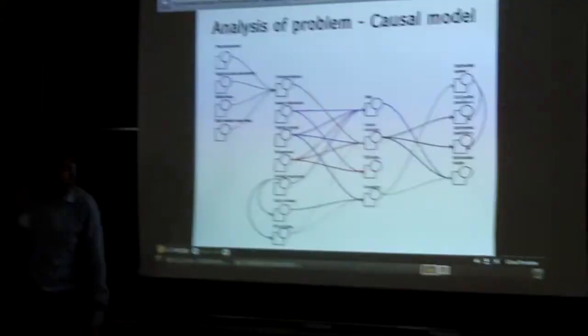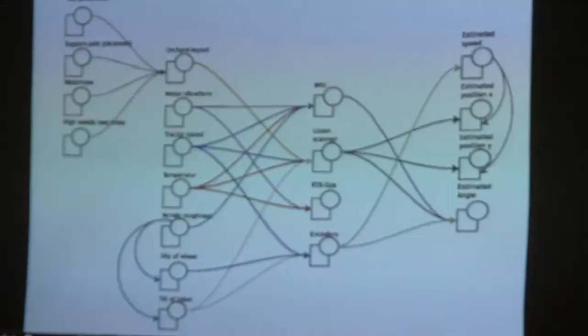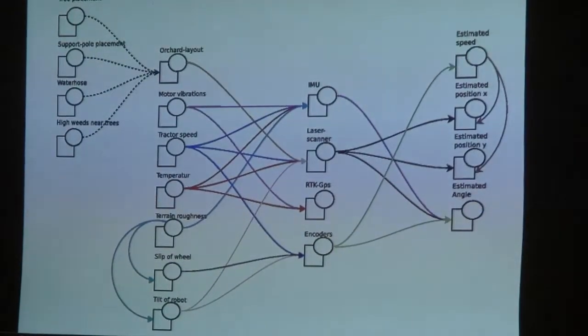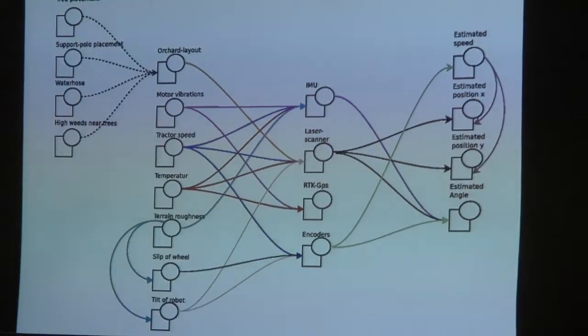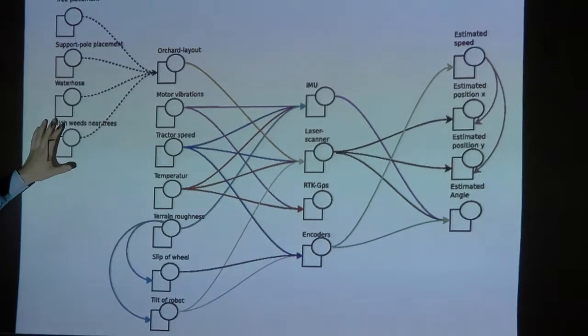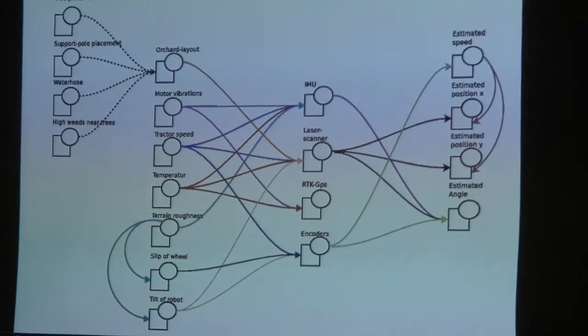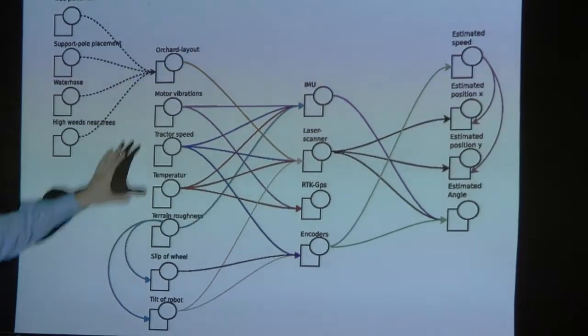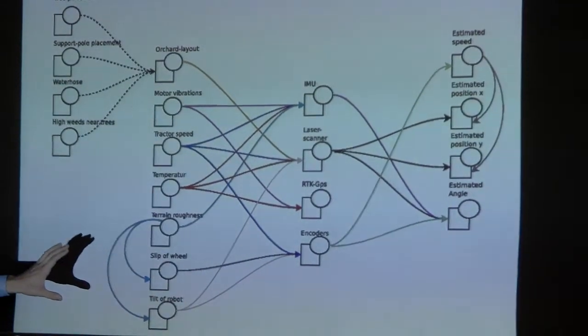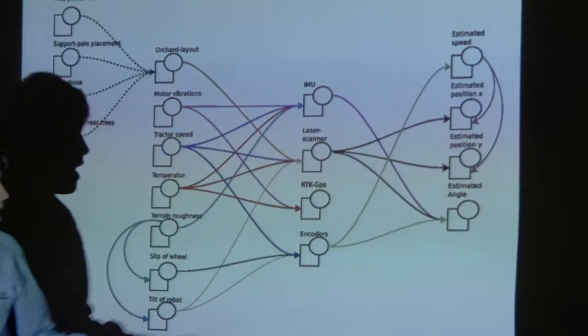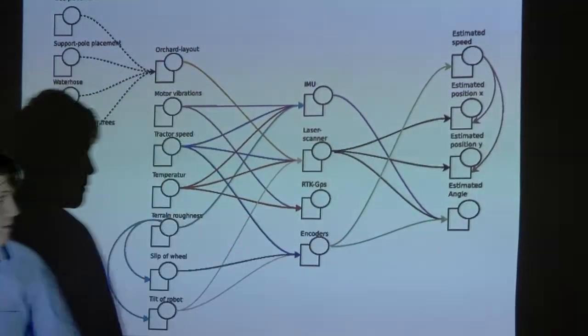I started off with making an analysis of the orchard and different things I could encounter. What you see in the first row is basically the things I see as the important parts of the orchard, and the external factors in the next row that have influence on the sensors and what factors they can measure.